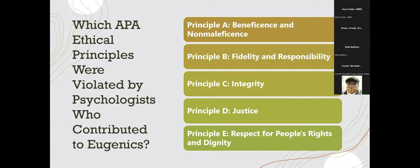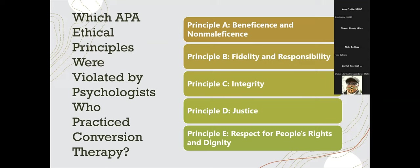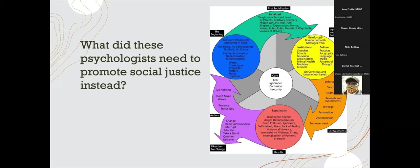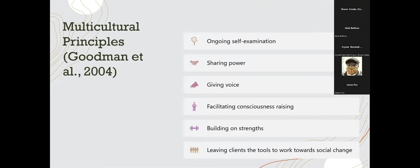I also wanted to promote elaborative encoding — making connections to previous classes. When we talked about the history of clinical psychology, we discussed the role that clinical psychologists played in contributing to eugenics and conversion therapy. I encouraged students to think through which ethical principles were violated through these harmful practices. Inspired by Dr. Annalise Singh's Racial Healing Handbook, I also wanted to make connections to a learning outcome — appreciating the import of cultural humility — by asking students to consider what these psychologists needed to understand in order to recognize they were causing harm and engaging in unethical behavior.